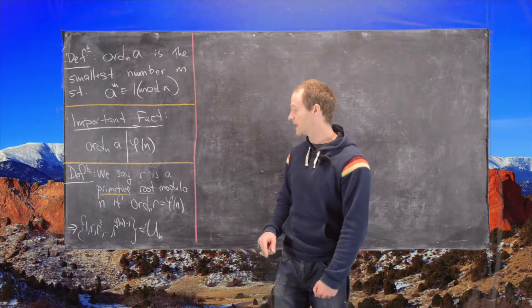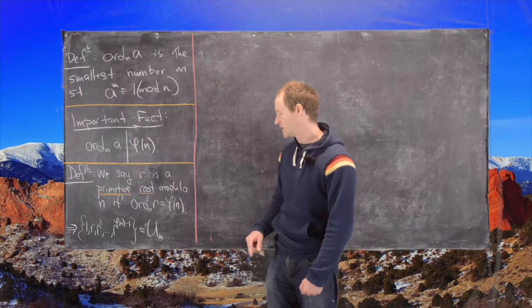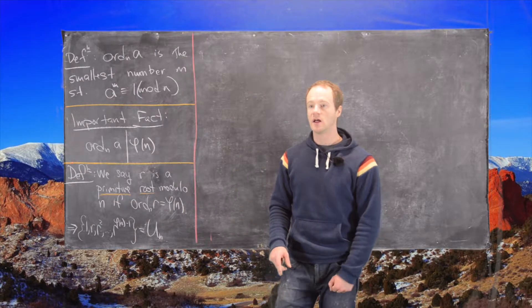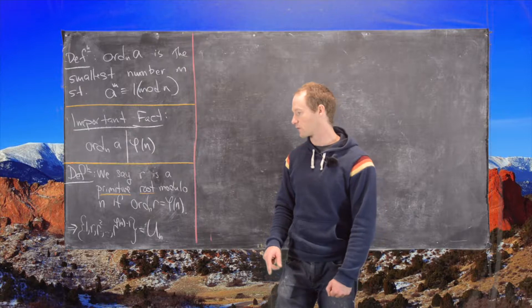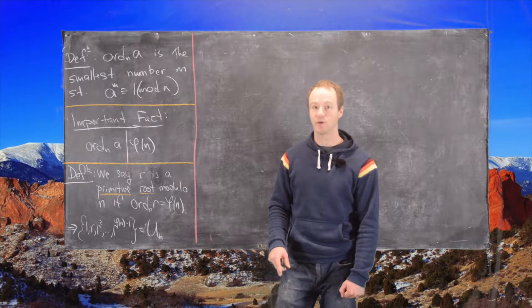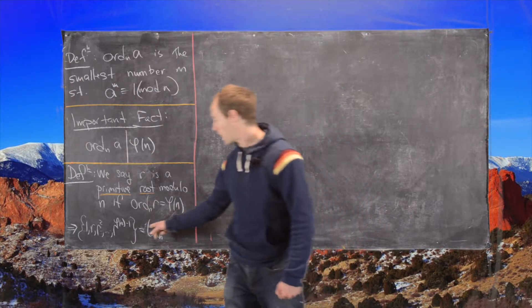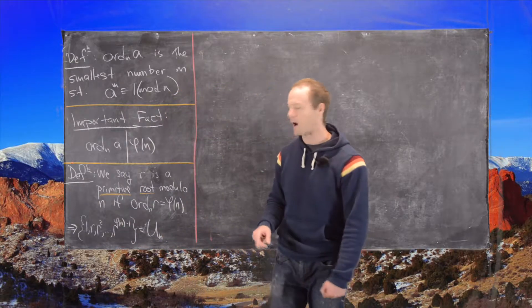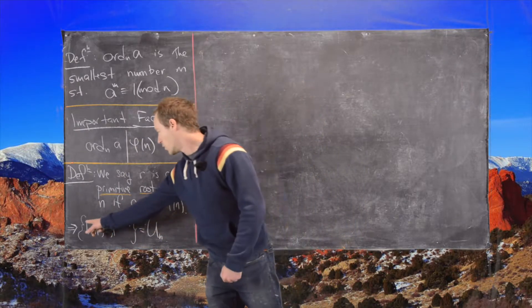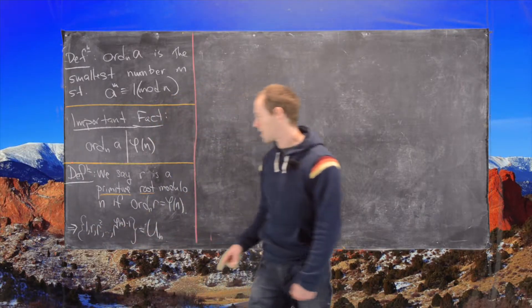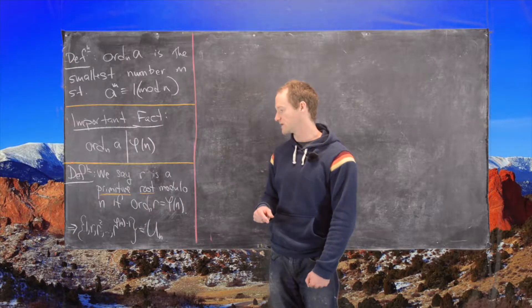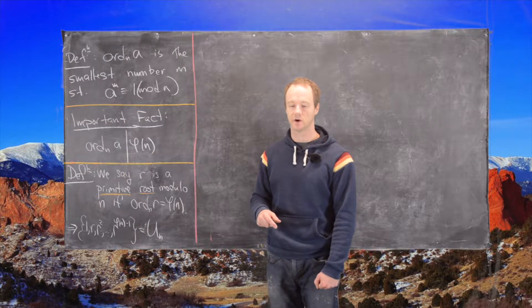So in terms of the group of units that means the group of units modulo n. And recall that that is all numbers that are relatively prime to n between 1 and n. So every number in this group of units can be written as a power of r. So we have 1 which is r to the 0, r, r squared up to r to the phi of n minus 1. We don't need to include r to the phi of n because that itself is 1.